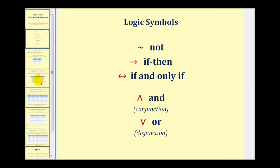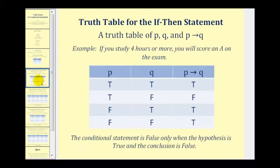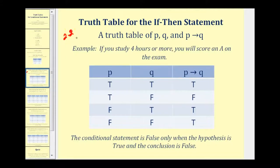Let's take a look at our first example. We want to complete the truth table for p, q, and if p then q. The first thing we have to do is list all the possible combinations of true and false for p and q. Since there are two options for p — true or false — and two options for q — true and false — that tells us we need four rows.